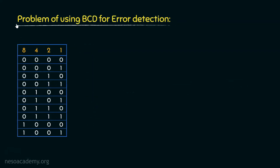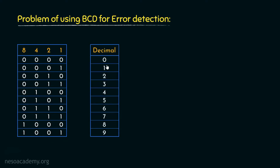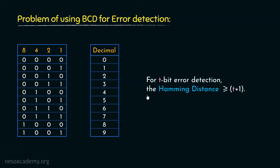Today, we will observe the problem of using BCD or 8-4-2-1 for error detection. We will try to assign all 10 valid BCD patterns to all the symbols of decimal, that is 0 to 9. For t-bit error detection, the Hamming distance is at least t plus 1. For 1-bit error detection, the Hamming distance should be at least 1 plus 1, that is 2.